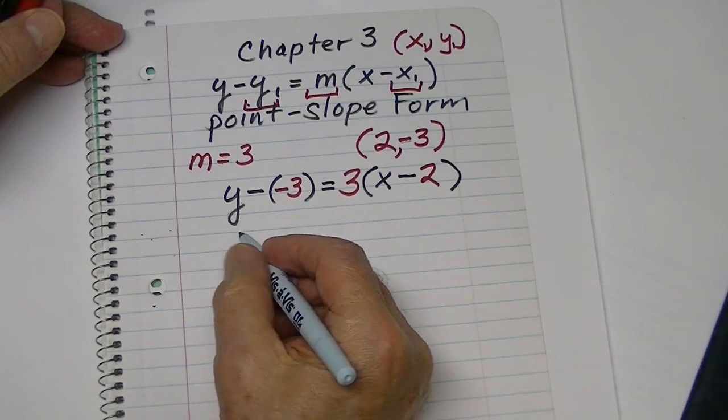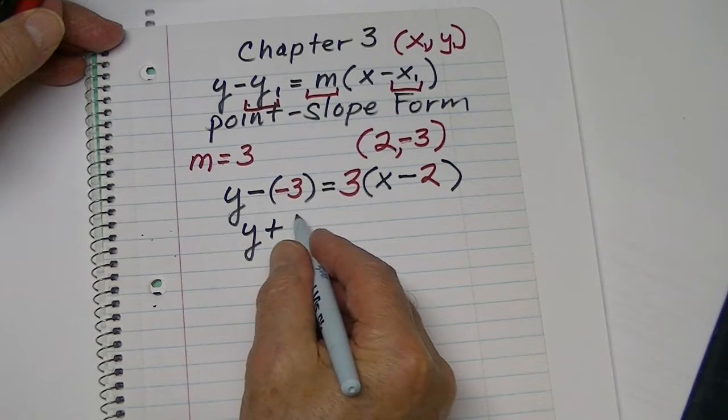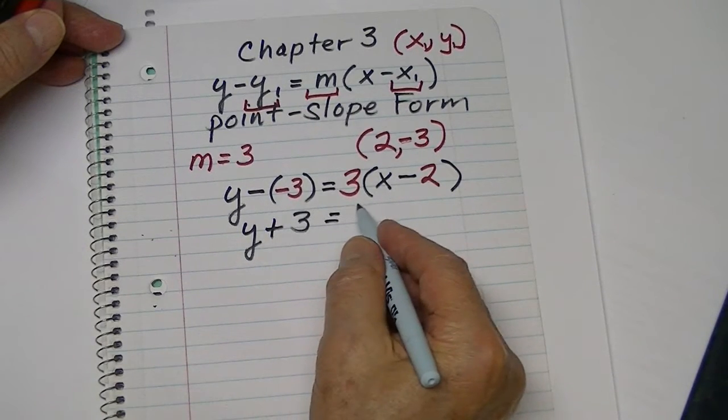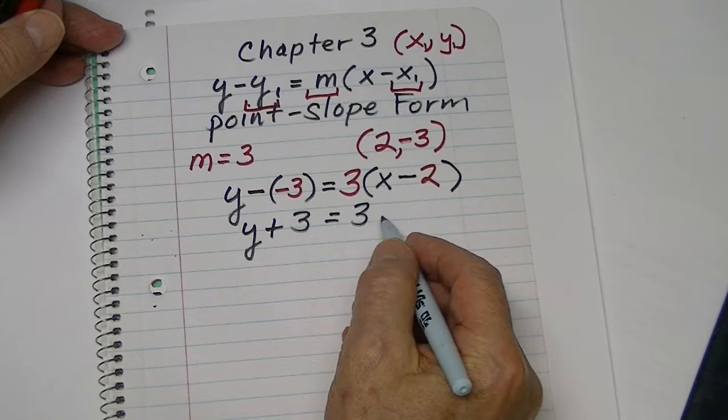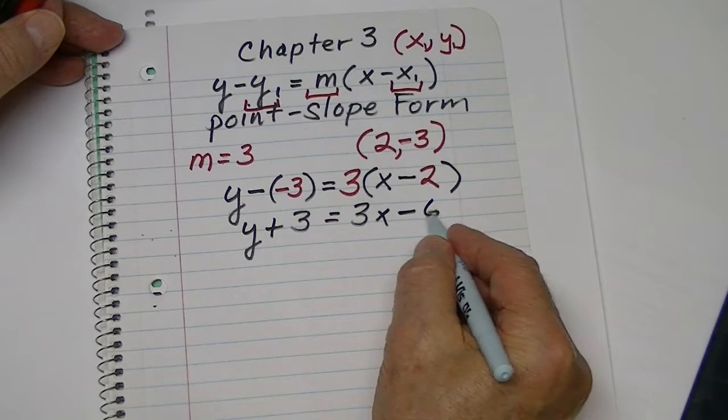So, now we go and solve the equation. We have Y. The opposite of a negative 3 makes this a positive 3. And then 3 times X is 3X. 3 times a negative 2 is a negative 6.